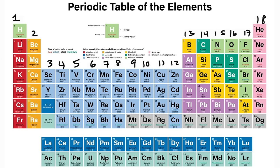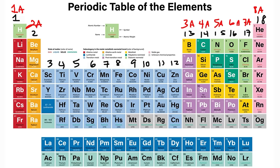There are other ways of naming the groups. Group 1 is also called group 1A; group 2 is group 2A; group 13 is group 3A; 14 is 4A; and then 5A, 6A, 7A, and 8A. These values also correspond to the number of valence electrons found in the elements of that group.